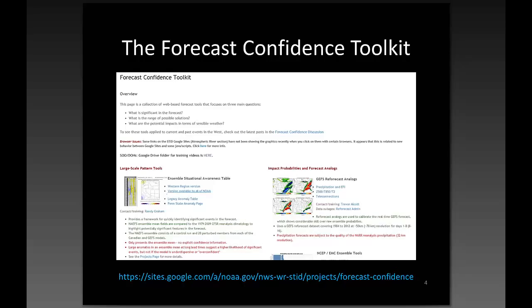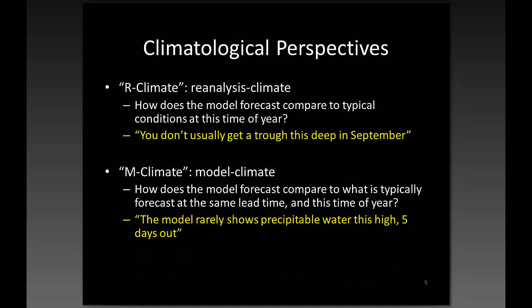The toolkit itself is just a Google site. What we've done is gathered a lot of different tools from all over the web, almost all outside of AWIPS. We're trying to give forecasters a good heads-up on large-scale pattern tools and potential forecast analogs — really just trying to gather all these different tools together and get them right in front of forecasters so they don't have to go hunting around the web trying to find useful information. If you go onto Google Sites and search for 'forecast confidence,' it should pop right up for you.